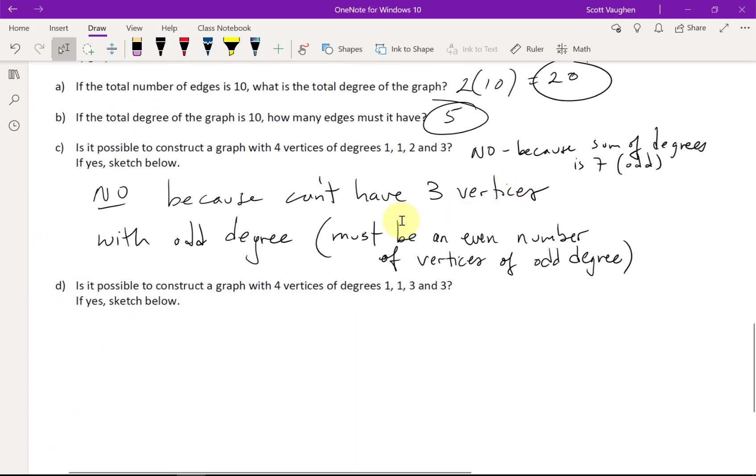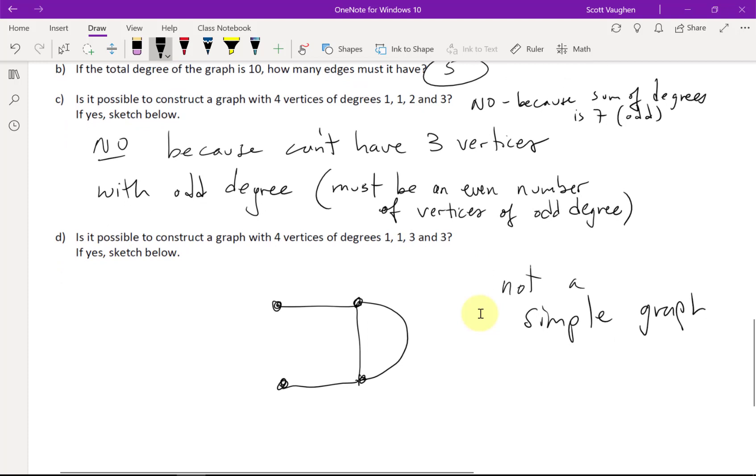So, now we can look at number, part D. Is it possible to construct a graph with 4 vertices of degrees 1, 1, 3, and 3? Well, here I have an even number of odd vertices. And so, yeah, that's possible. And if you add it all up, it's 1 plus 1, that's 2, plus 3 more, that's 5, plus 3 more, that makes 8. That's an even number. So, we have 4 vertices. So, let's draw our 4 vertices. We have to have 2 of them with degree 1, and the other 2 with degree 3. So, I think maybe I'll just do it like this. I'll make the observation that it's not what's defined as a simple graph because it has a parallel edge. Or it has parallel edges.